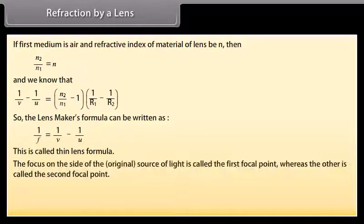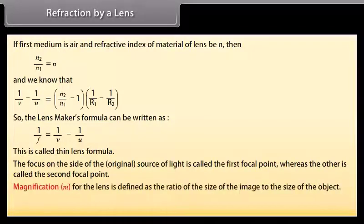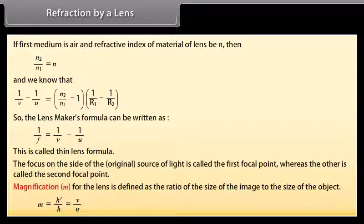The focus on the side of the source of light is called the first focal point, whereas the other is called the second focal point. Magnification M for the lens is defined as the ratio of the size of the image to the size of the object: M = h'/h = V/U.